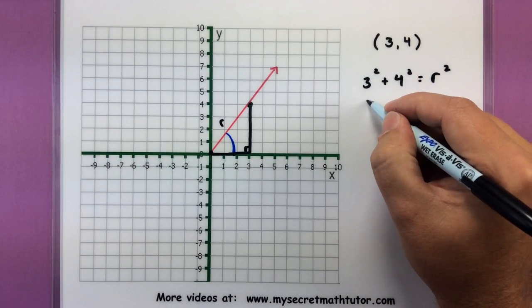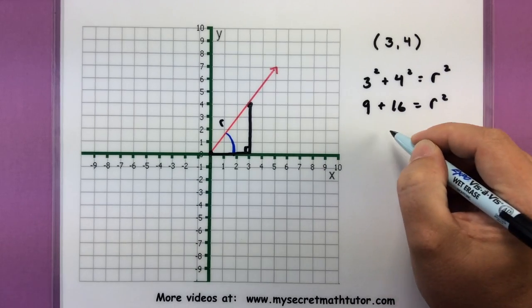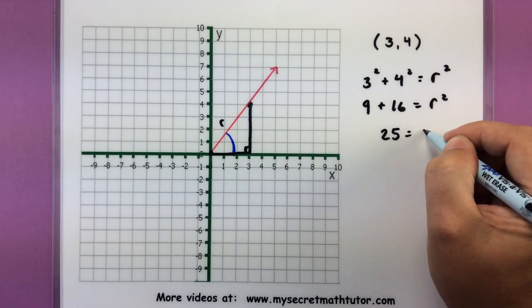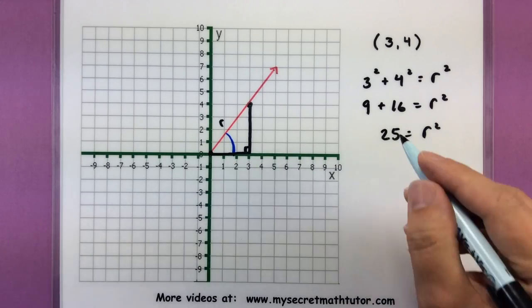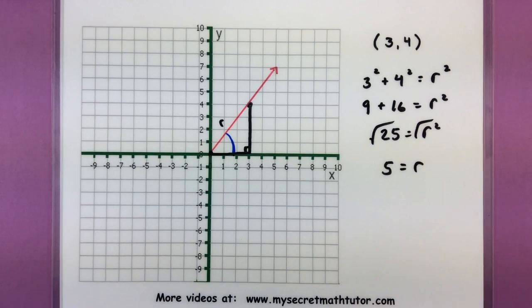So this problem is not too bad, 3 squared is 9, 4 squared is 16, so 25 equals r squared. Or if we take the square root of both sides I can simply say that r is equal to 5 and now I have that length.